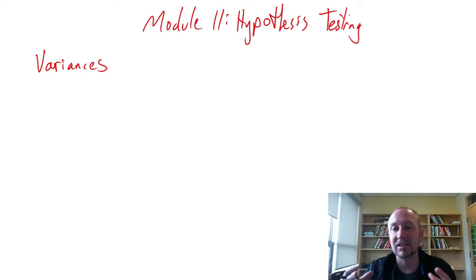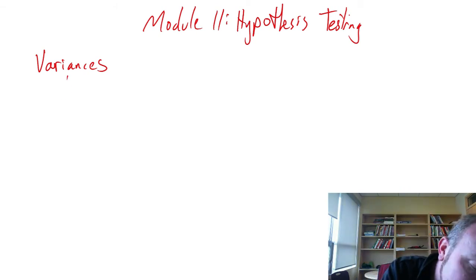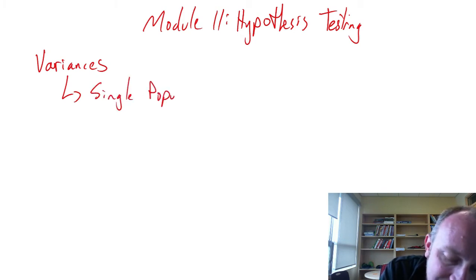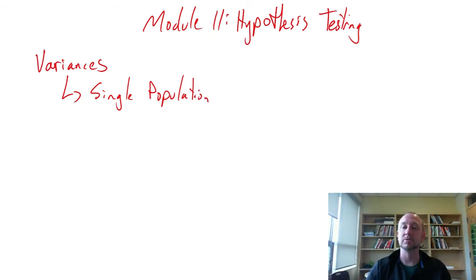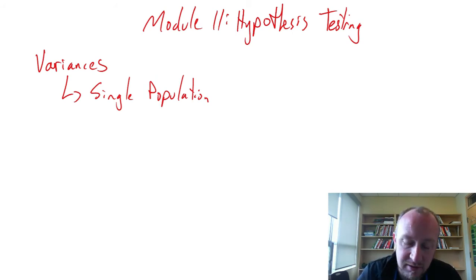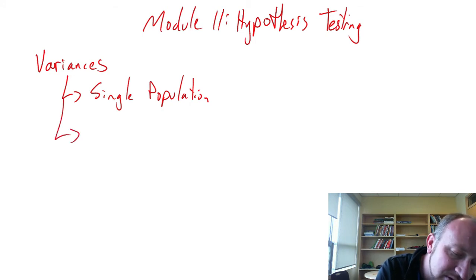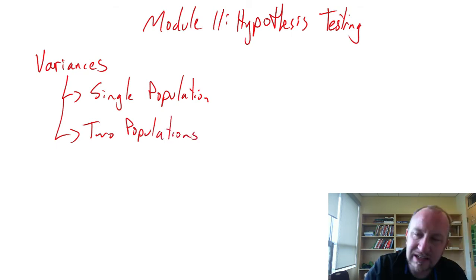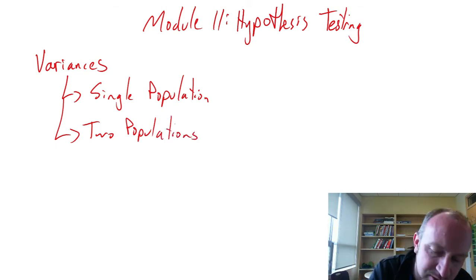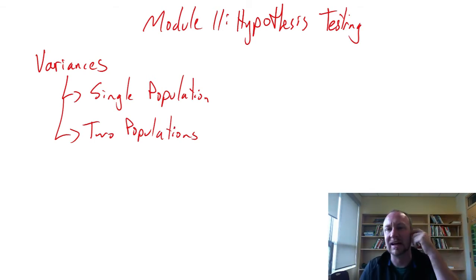In this module we'll bring together both the single population scenario and, similar to the sequence of events in previous modules, we'll look at hypothesis testing and interval estimates. We'll also include two population tests on variances, though for two populations we'll only look at hypothesis testing — not interval estimates.